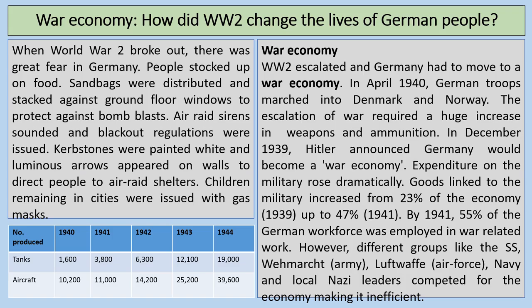In terms of war economy, how did World War II change the lives of German people? When the Second World War broke out, there was huge fear in Germany. People stocked up on food. Sandbags were stacked against ground floor windows to protect against bomb blasts. Air raid sirens sounded, blackout regulations were issued, curbstones were painted white, and luminous arrows appeared on walls to direct people to air raid shelters in the dark. Children remaining in cities were issued with gas masks. There was already a big effect on Germany's home front when the war broke out.